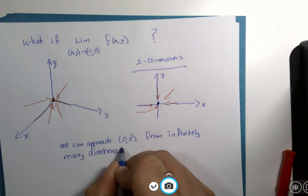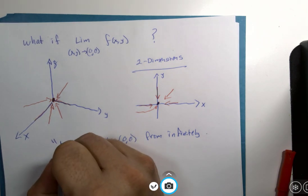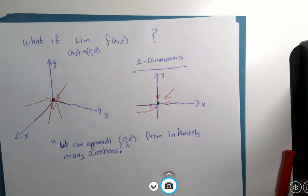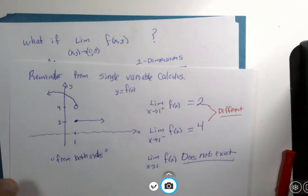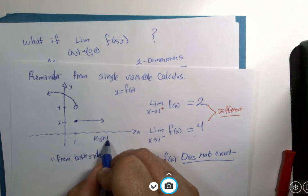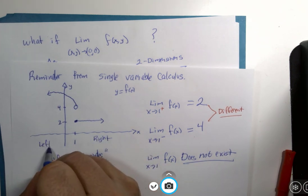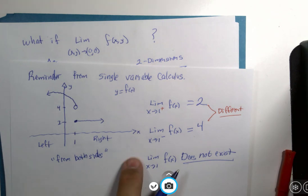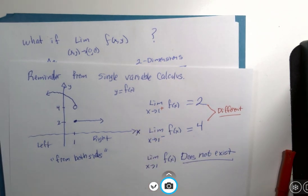I'm going to put an exclamation point on that because that is not a small piece of information. We only had two directions to choose from, right and left, when it was an x value only. When it was only the x value.